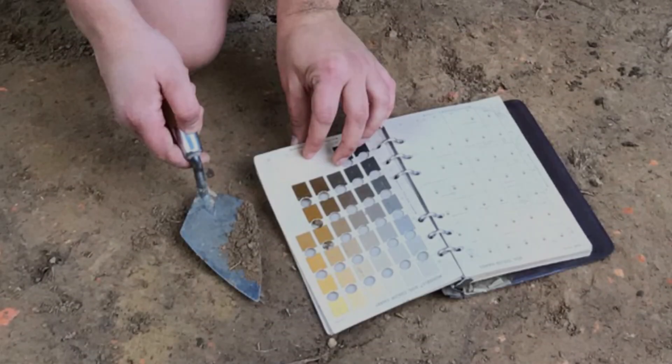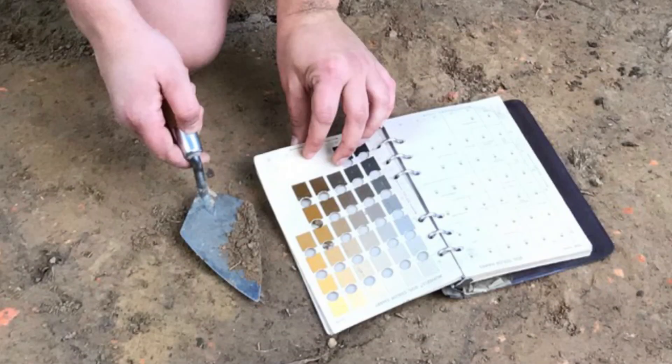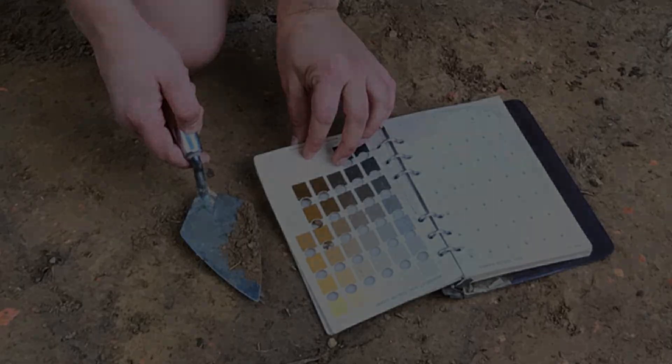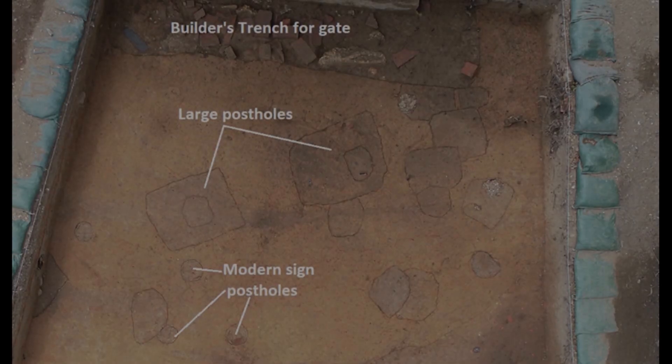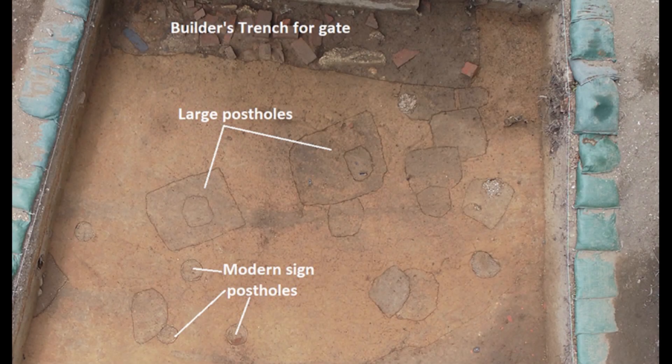A soil color chart gives Munsell notations and their common names. It even has holes that allow archaeologists to compare these notations to soil samples. Changes in soil color help archaeologists differentiate soil layers and the features within them. A Munsell color chart provides a standardized, reproducible record of these finds.